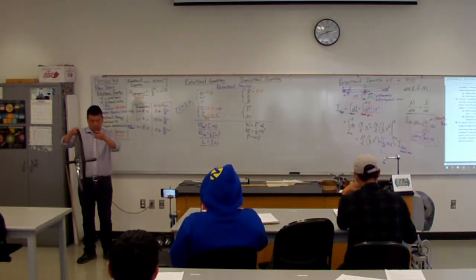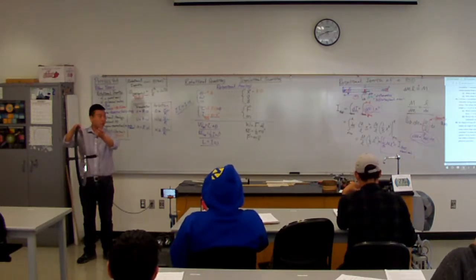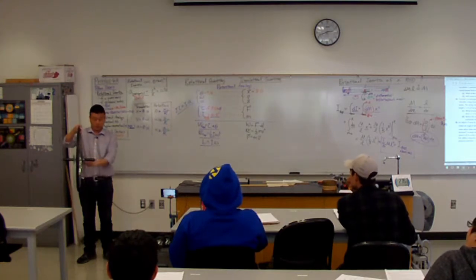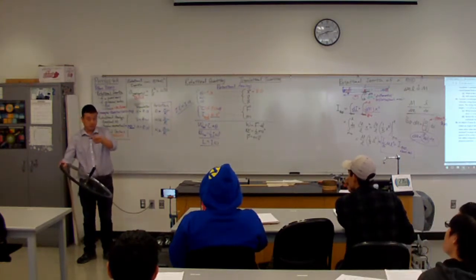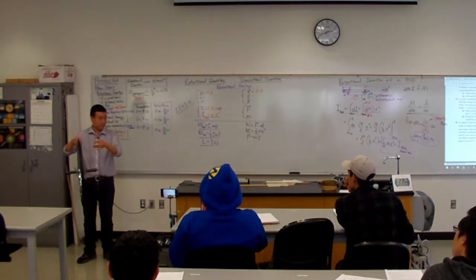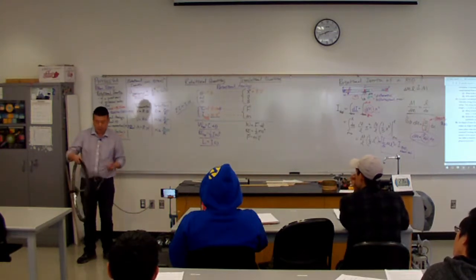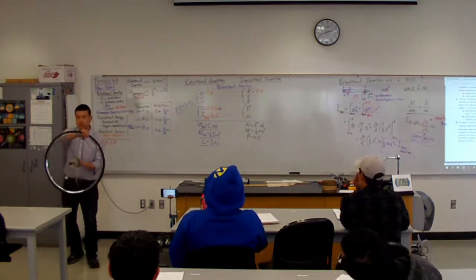So, if I hold this from this end and let go, there will be torque due to gravity. Gravitational force acts here, pulls it down and swings it down this way. I mean, I don't have to do that for you to be convinced that that's what's going to happen, right? Now, the motion that you will see is something called precession.